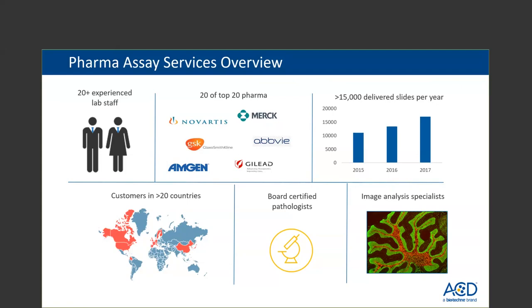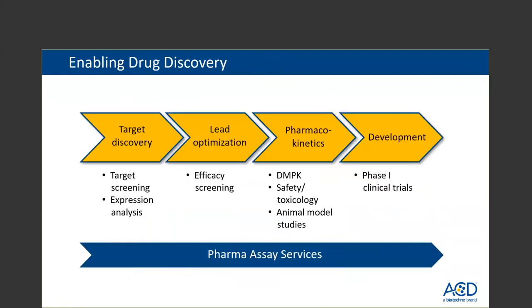Our team also includes image analysis specialists who can help you understand which fluorophores would be best for your study's needs and which acquisition platforms might work best. The work we do here helps enable drug discovery, applicable all the way from target discovery through development — used at the target screening stage, efficacy stage, DMPK studies, safety and toxicology studies, as well as performing early feasibility assessment for development in Phase 1 clinical trials.